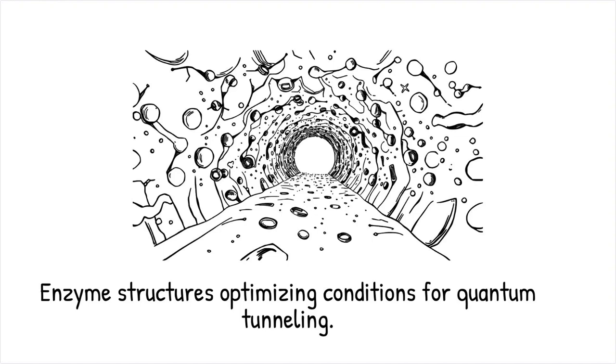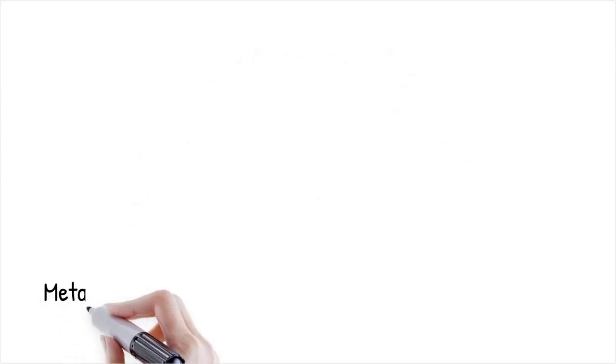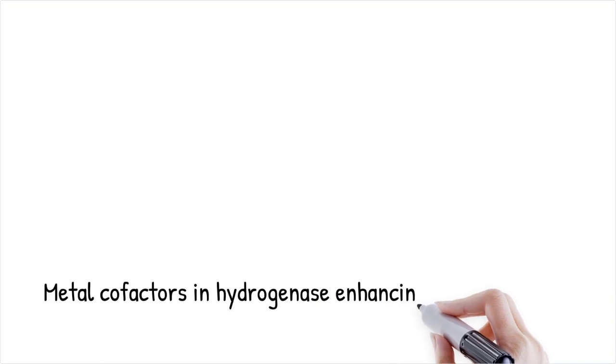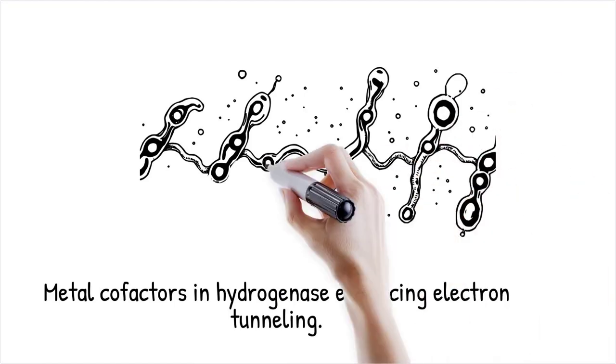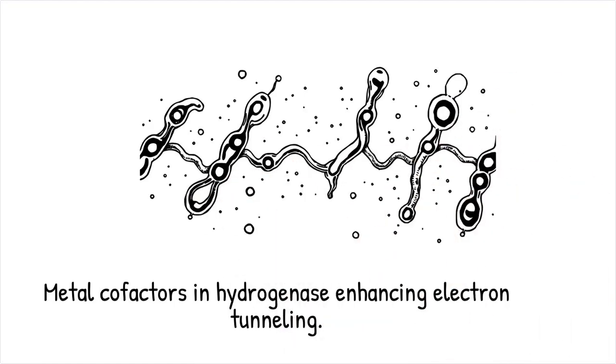For example, hydrogenase enzymes contain metal cofactors that assist in electron tunneling, reducing energy costs for biological hydrogen production. It's like positioning a tight rope perfectly so that a person can glide across instead of jumping.